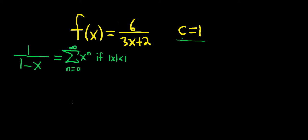So the goal is to rewrite our function in such a way that allows us to use this formula. So let's try to do it. So we have f of x is equal to 6 over 3x plus 2. So this is equal to... there's nothing we can do about this 6 right now, so I'm going to leave it there for now.